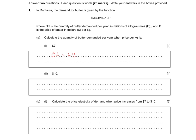Qd equals 420 minus 19P, so therefore 420 minus 19 times $7, and that gives us 287 million kilograms of butter.